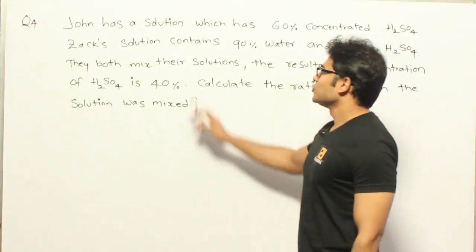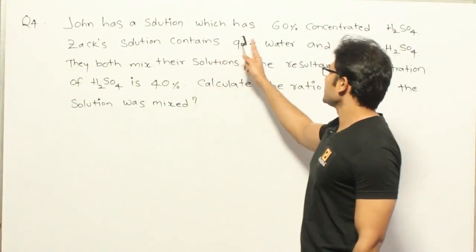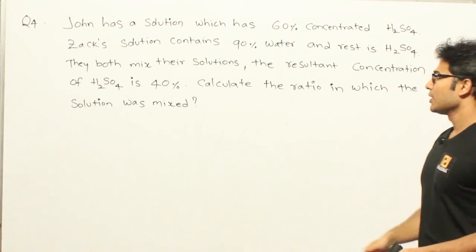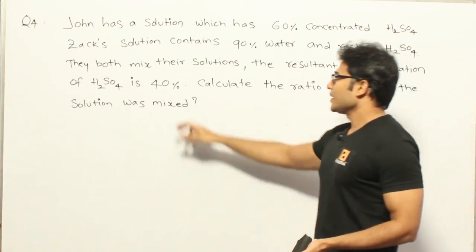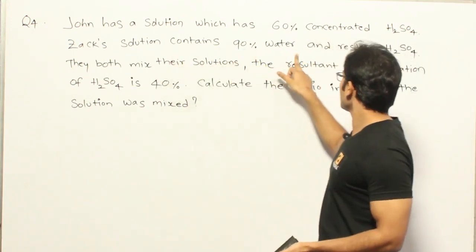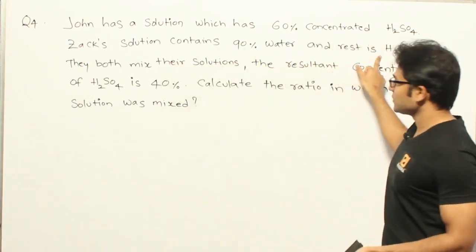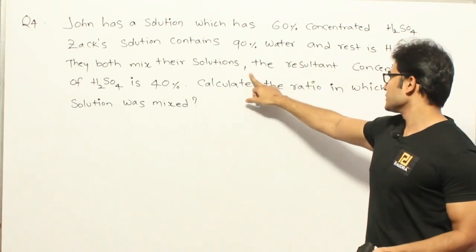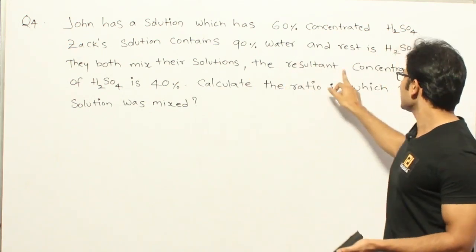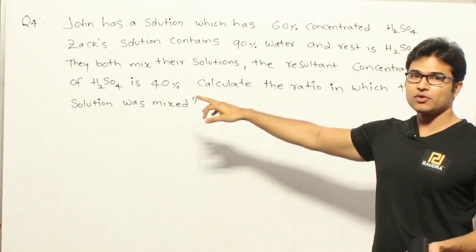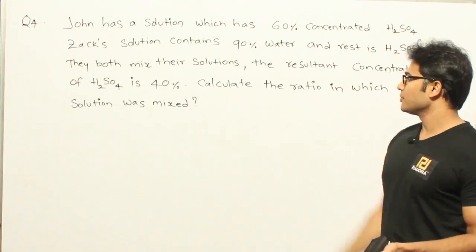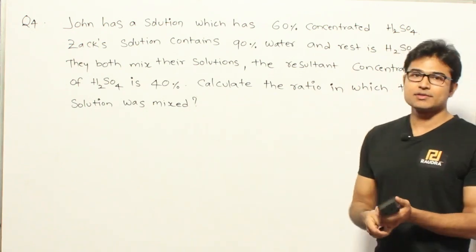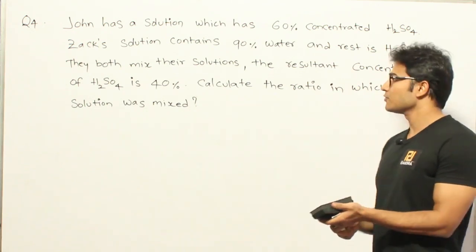John has a solution which has 60% concentrated H2SO4, and Jack's solution contains 90% water and the rest is H2SO4. They both mix their solutions, and the resultant concentration of H2SO4 is 40%. Calculate the ratio in which the solution was mixed.